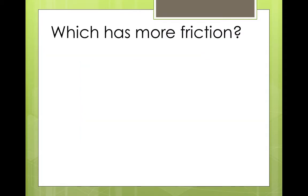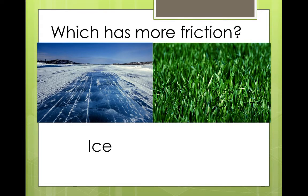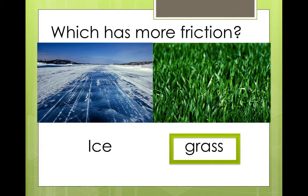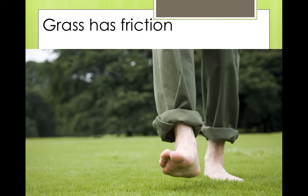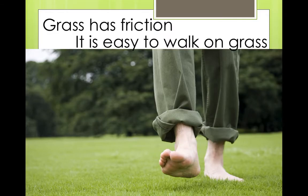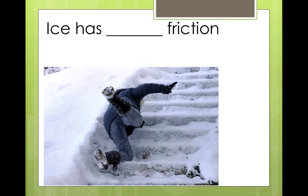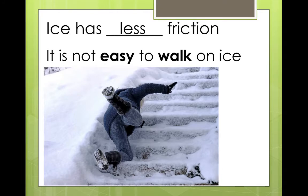No friction. Which has more friction? Ice or grass? More friction. Think of texture. Grass has more friction. Grass has friction. And it is easy to walk on grass. Easy. But, ice has more or less friction. We say less. Ice has less friction. So, it is not easy to walk on ice.